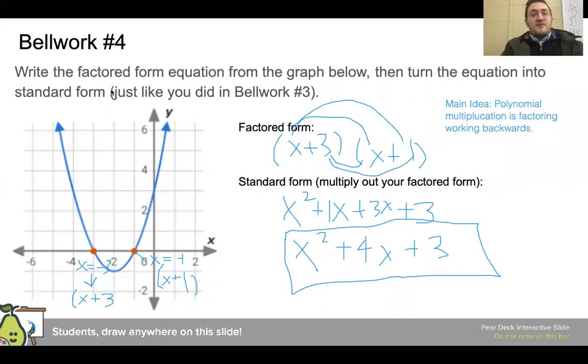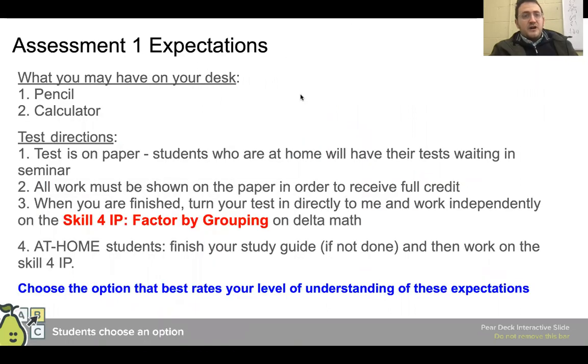So these four problems really do go through the main ideas of what you're going to be seeing on the mastery today. And I think these are some types of questions that are asked a lot on the SAT, like what are the x-intercepts and what are the zeros and translating between the forms. So with that, what you will be needing to do after having watched this video is to have a pencil at your desk. There may be a limited supply of calculators. And then the test is on paper. So if you are at home, you'll be taking it during seminar. And then when you are done with your test, you will be doing your skill four IP factor by grouping.